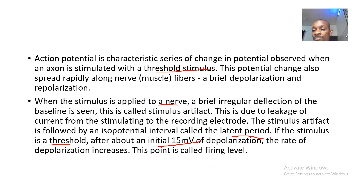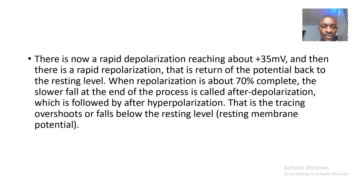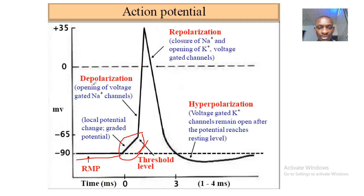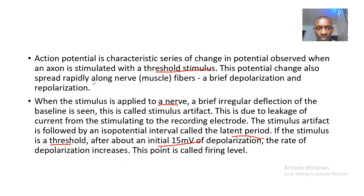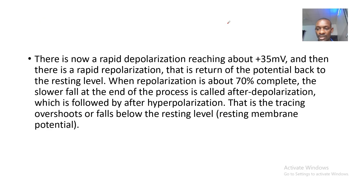If the stimulus is at threshold, after about the initial 50 millivolts of depolarization, the rate of depolarization increases — this point is called the firing level. There is then a rapid depolarization reaching about positive 35 millivolts.